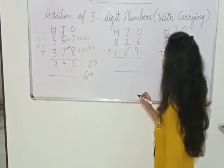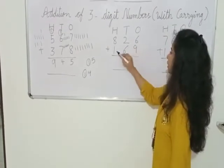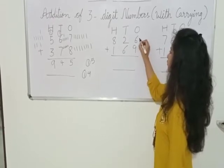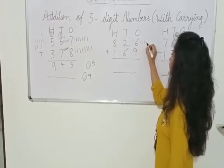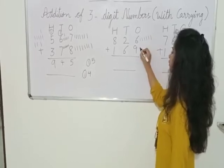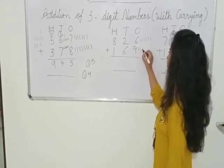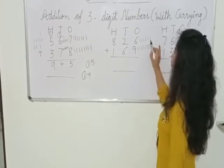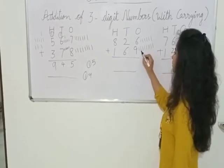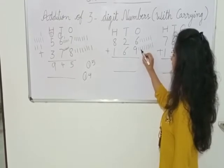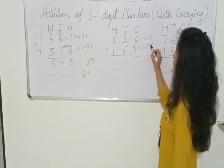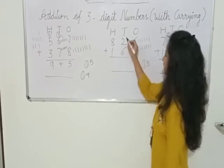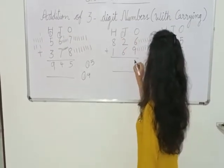Let's take another example. Here we have 826 and 169. So first we will calculate 6 plus 9. We draw 6 lines: 1, 2, 3, 4, 5, 6. Now we draw 9 lines: 1, 2, 3, 4, 5, 6, 7, 8, 9. 6 is already there — after 6: 7, 8, 9, 10, 11, 12, 13, 14, 15. We carry forward this 1 to the 10's place and write 5 at the 1's place.